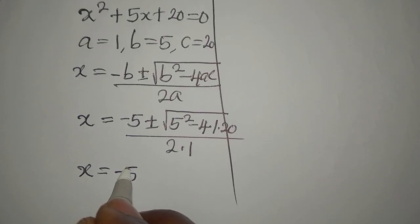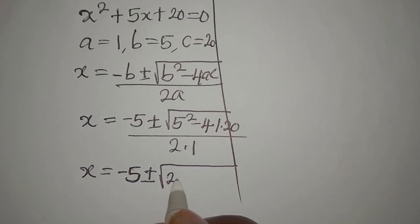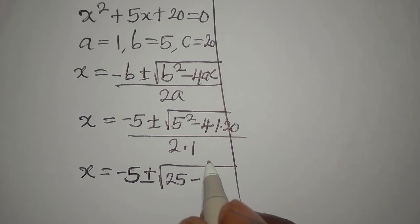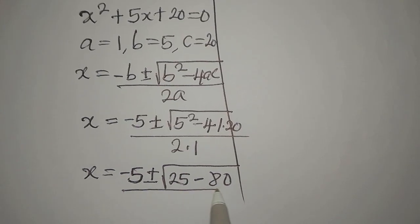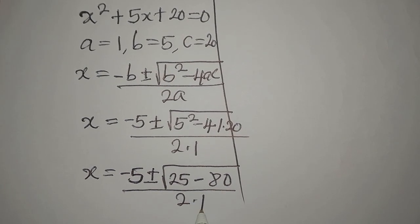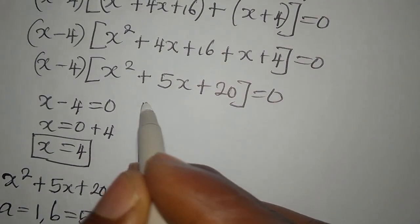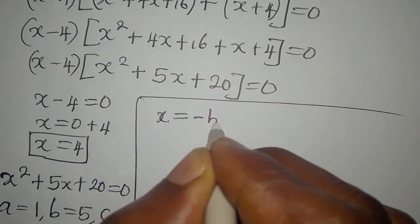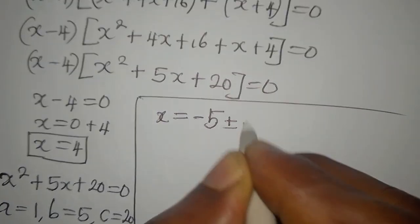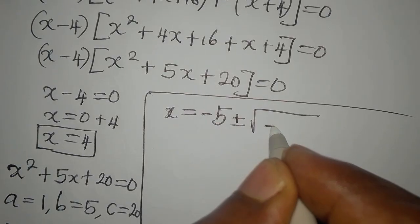So x equals minus 5 plus or minus the square root of 25 minus 80, divided by 2. That gives us 25 minus 80, which is minus 55. So we have minus 55 divided by 2 under the square root.